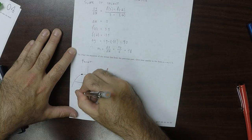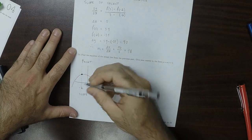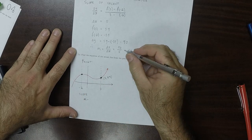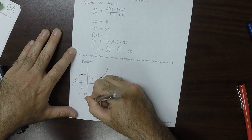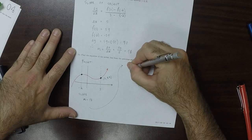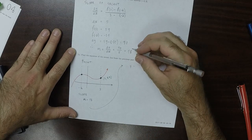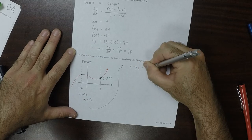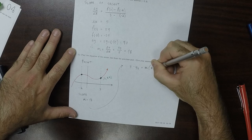So we already have a point and we found the slope. The point is that the slope is m equals 18, so it's just a matter of plugging it into the point-slope formula: y minus y1 is m multiplied by x minus x1.